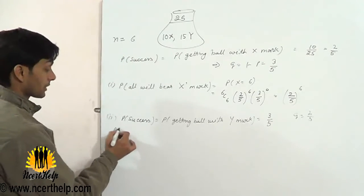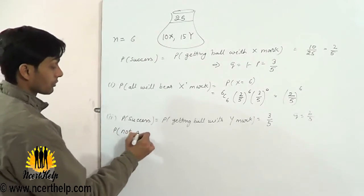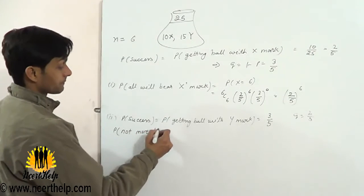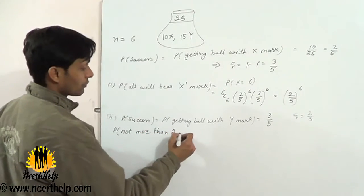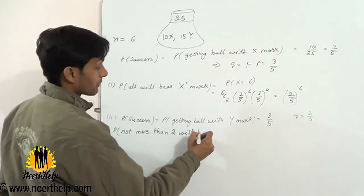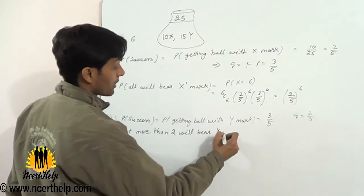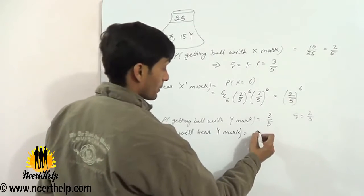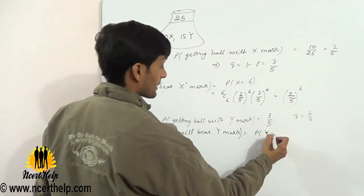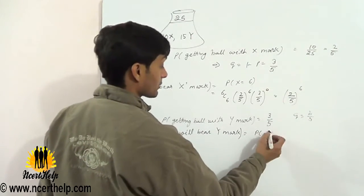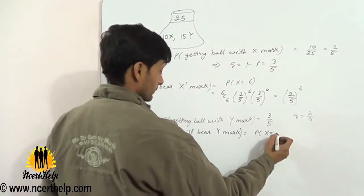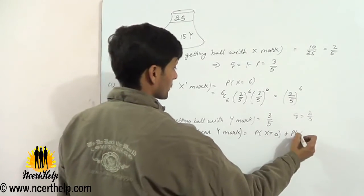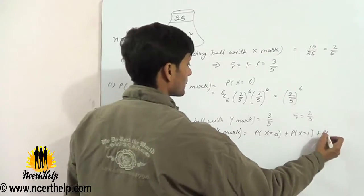So probability of not more than 2 will bear Y mark, the random variable X is equal to 0 plus 1 plus 2.